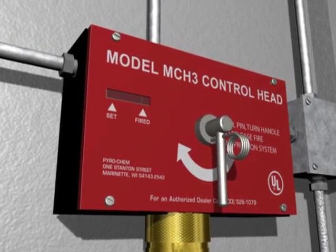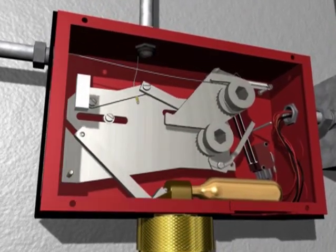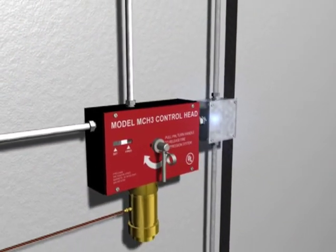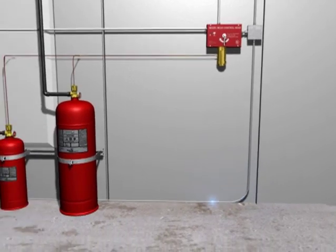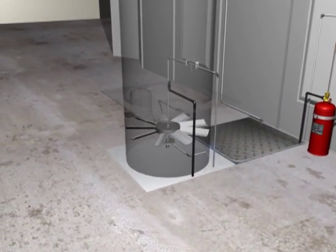When the system is actuated, the lack of cable tension releases the spring-loaded mechanism within the mechanical control head, initiating the fire suppression system. A micro switch within the control head is used to activate the alarm, simultaneously shutting down the fan and other electric processes.